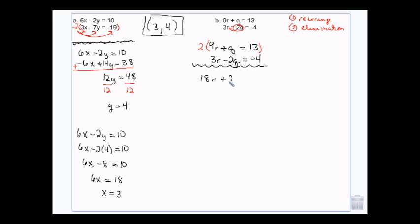So, I'm going to multiply this by 2. And I'm going to get 18r plus 2q equals 26. And I'm going to get 3r minus 2q equals negative 4. Then, I can add those together. 18 and 3 is 21r. The q's go away. 26 minus 4 is 22.